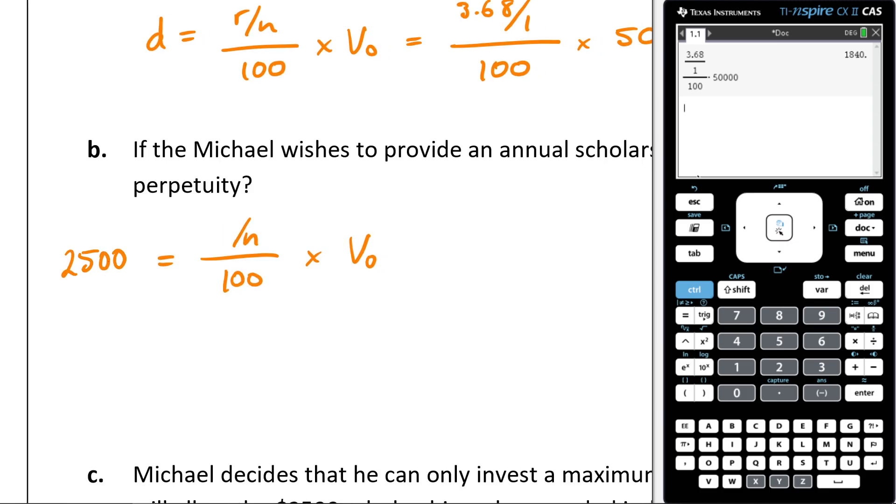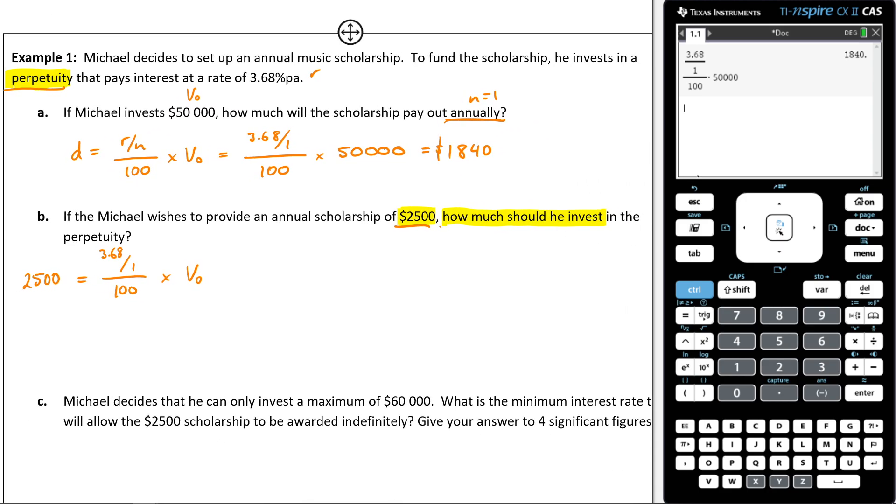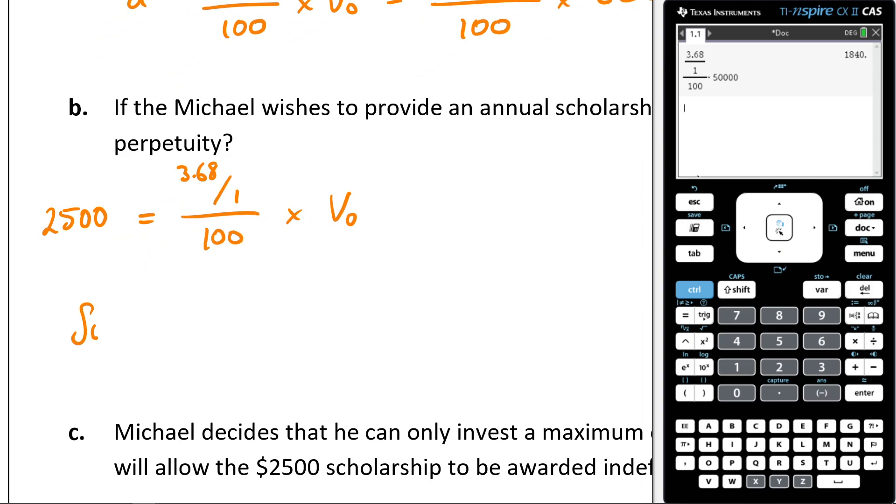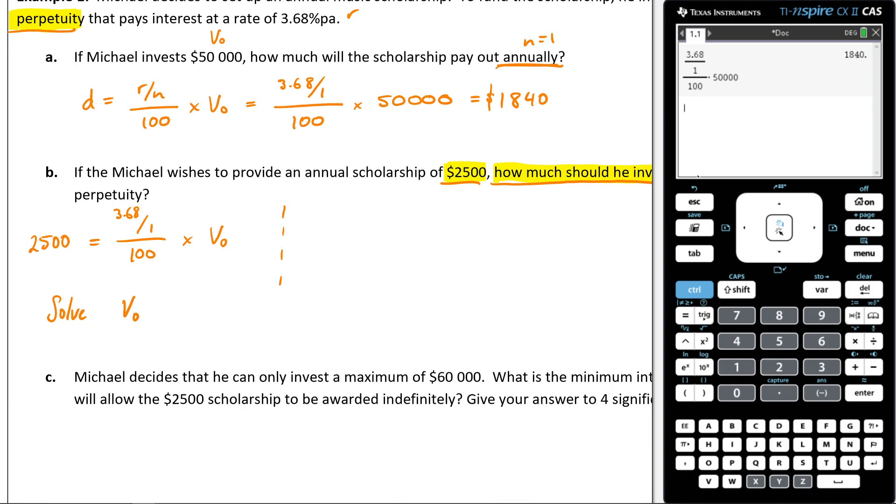I know what the R is. The R hasn't changed, it's still 3.68. My N hasn't changed, it's still 1. What I don't know is the V₀. How much should he invest? I don't know what that is. So what I need to do is I need to solve for V₀. That's what I need to do.